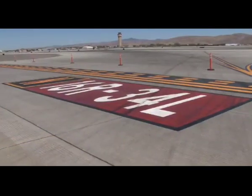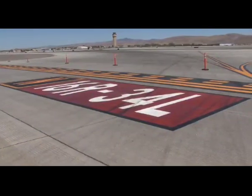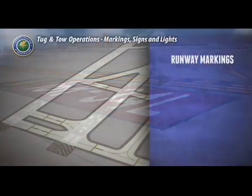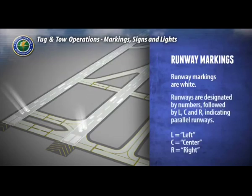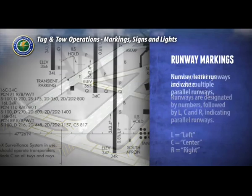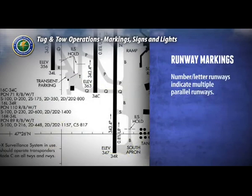Certain signs may also be painted on taxiways and runway surfaces. All runway markings will be white. Runways are designated by numbers, and at some airports are followed by the letters L, C, and R, meaning left, center, and right. It's critical to recognize that a numbered runway designation followed by a letter indicates the presence of multiple parallel runways.